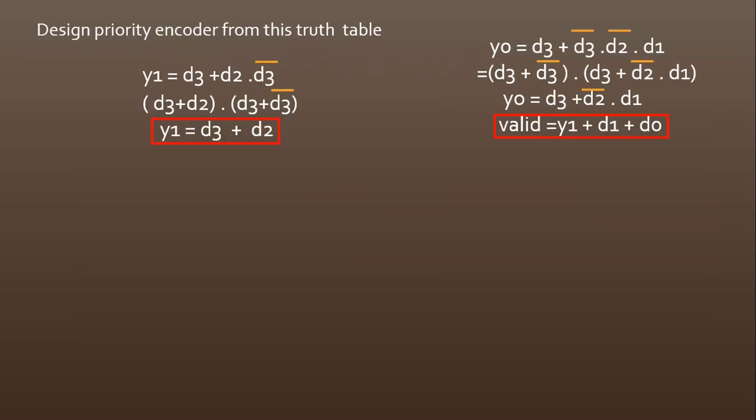Friends, with the help of the truth table, you can write the expressions for y1, y0 and valid very easily. Expression of y1 equals d3 plus d2. Similarly, the expression of y0 equals d3 plus d2 bar times d1. Similarly, you can find the expression of valid. I am not going to dig deep into these expressions. They are very easy to calculate from the truth table.